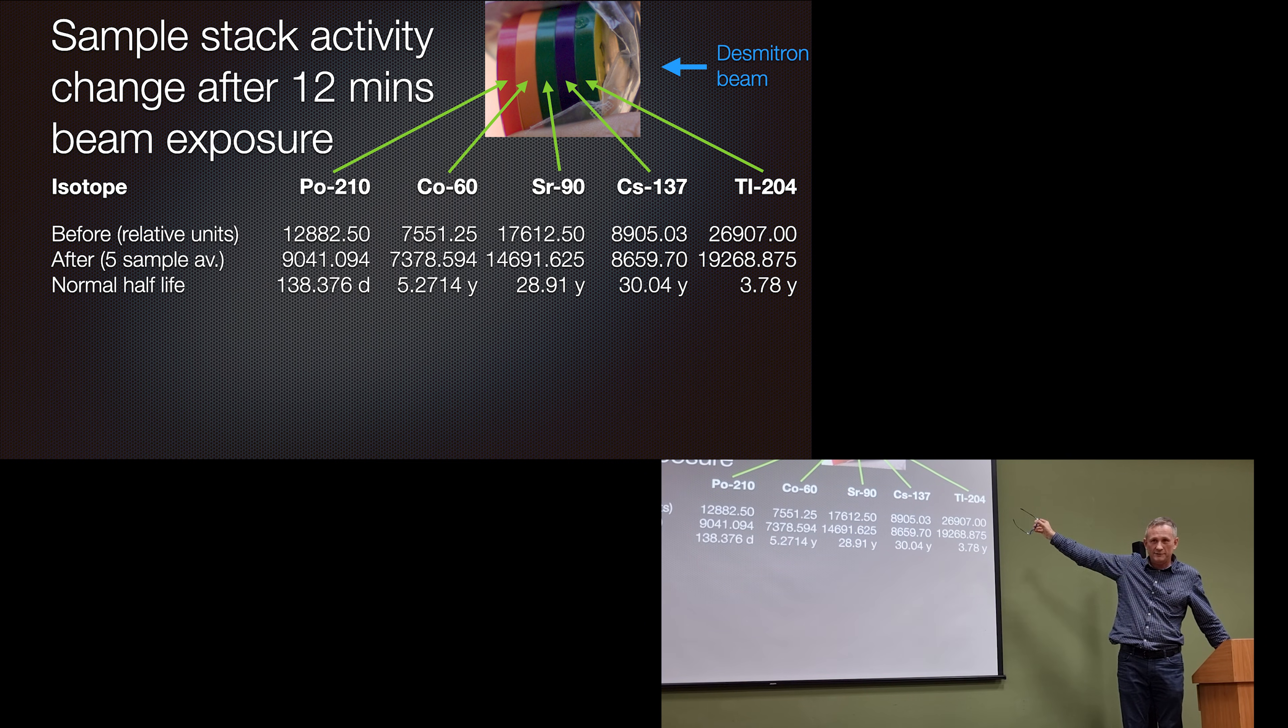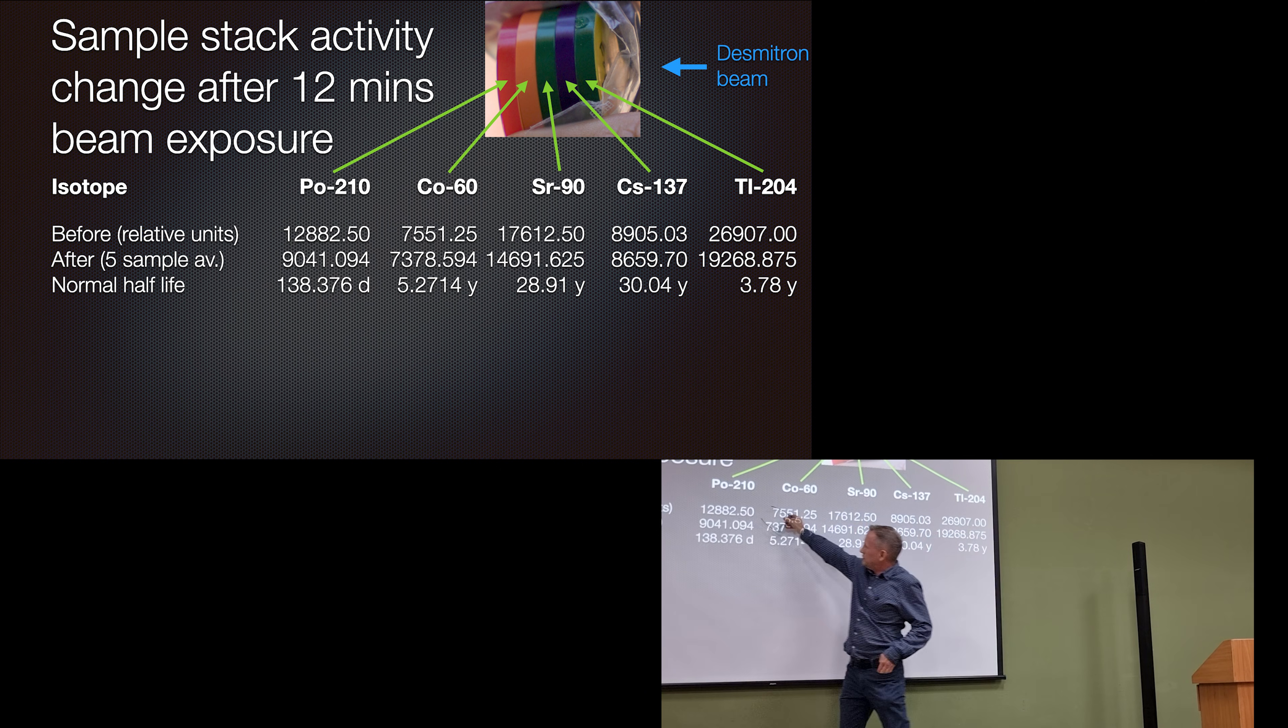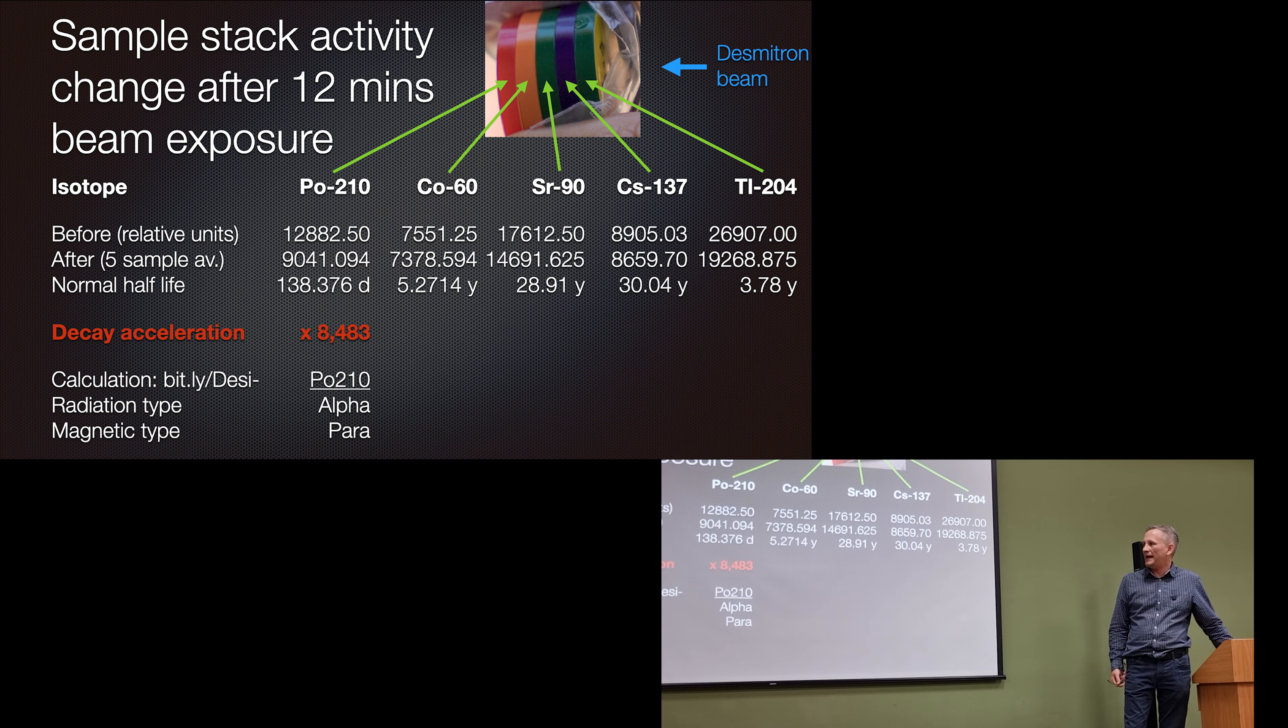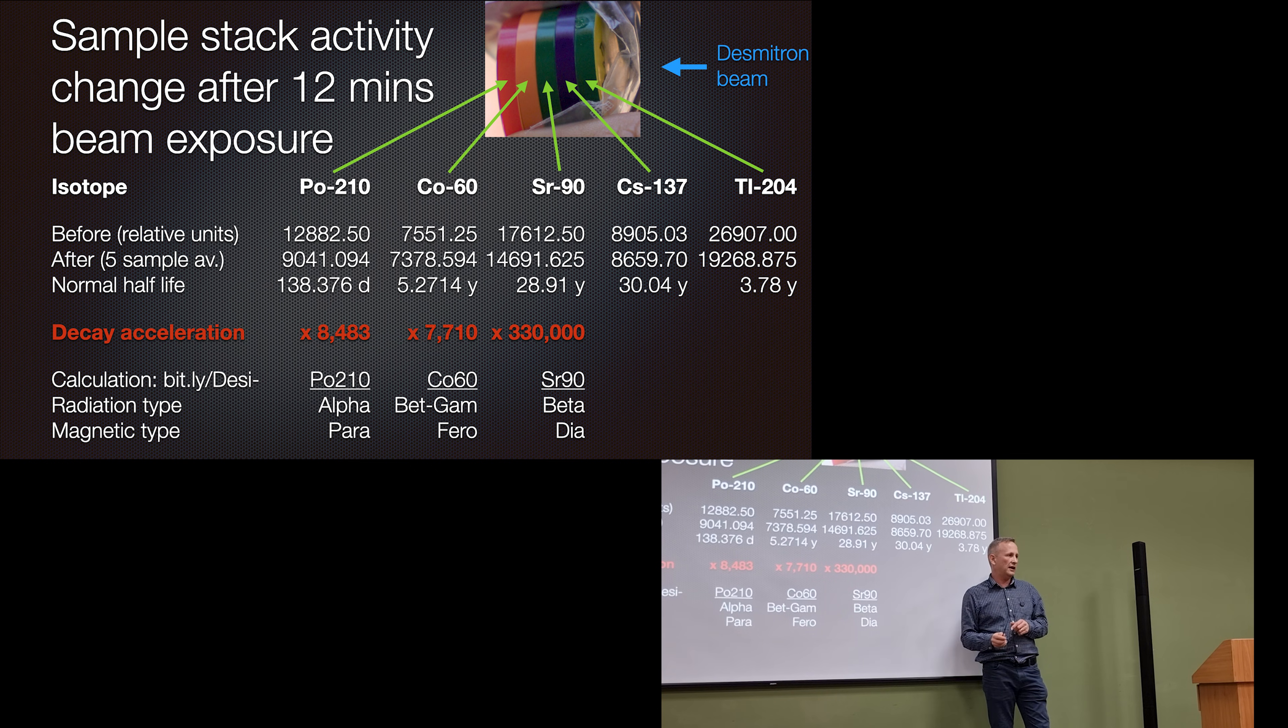Okay, here's your money shot. There's our isotopes. We've got our before, after 5 sample average. And the normal half life is this. Using that and then doing a sampling afterwards. And seeing what the activity of the sample was. Decay acceleration. 8,483 times for polonium-210. 7,710 for cobalt-60. 330,000 for strontium-90.